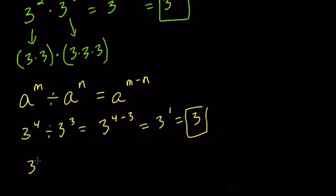And this extends to the idea where when you divide, you cancel out pairs. So 3 to the 4th is 3 times 3 times 3 times 3 divided by 3 times 3 times 3.